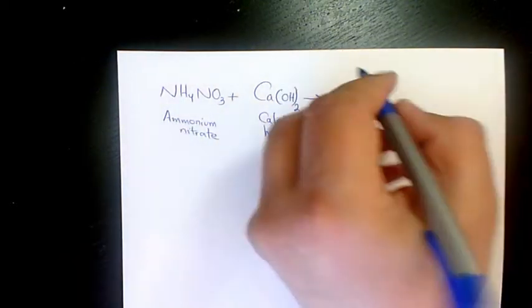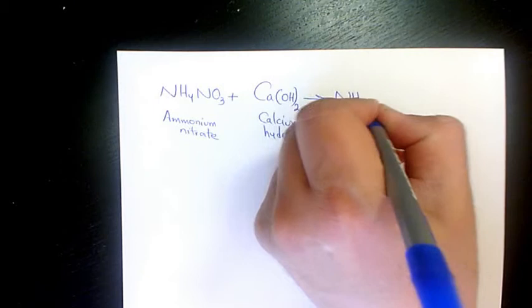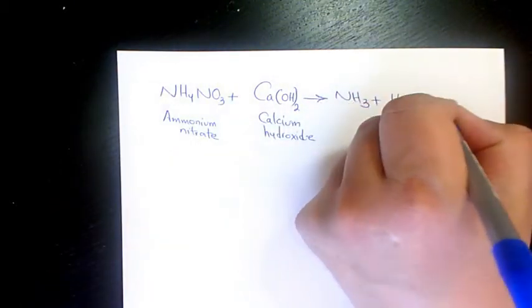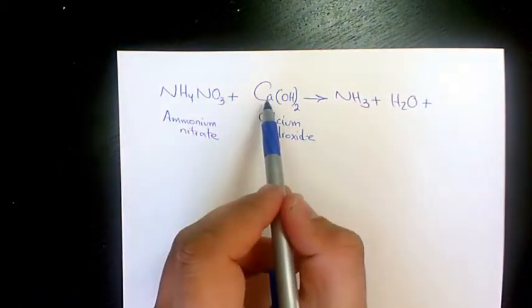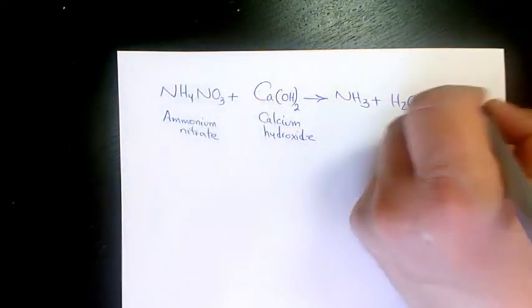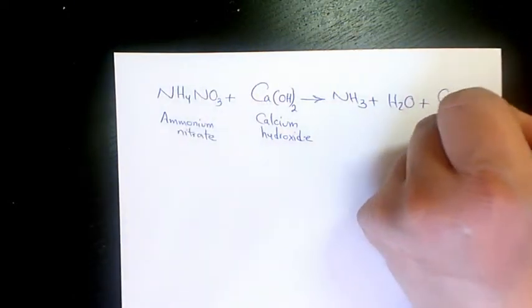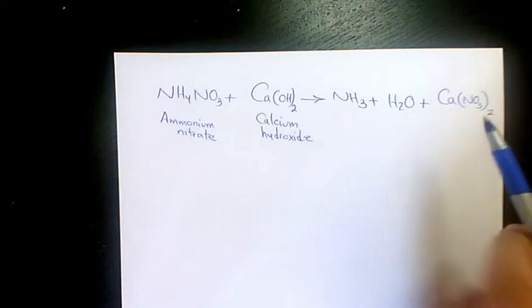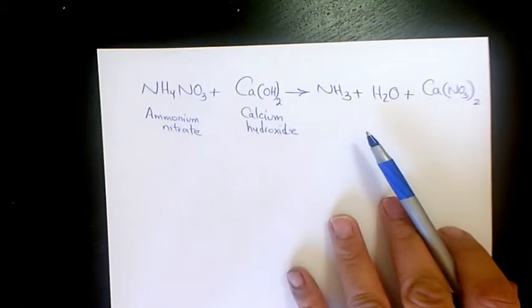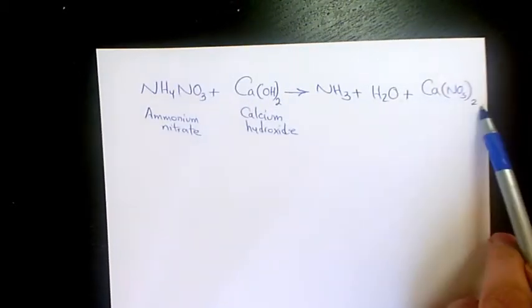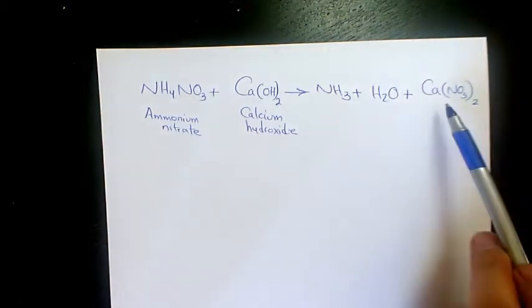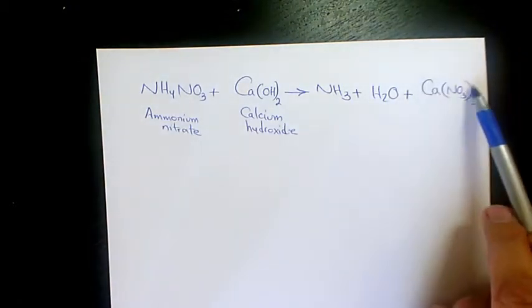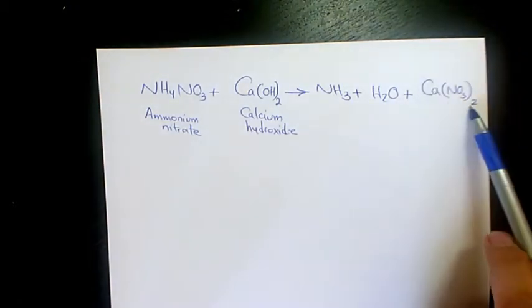The reaction is going to be NH3 plus H2O plus calcium nitrate Ca(NO3)2. Why do we have Ca(NO3)2? Because calcium has a charge of +2 and NO3 is -1, so calcium plus two NO3 negative gives us the formula. That's why the 2 sits here, and we don't write 1.